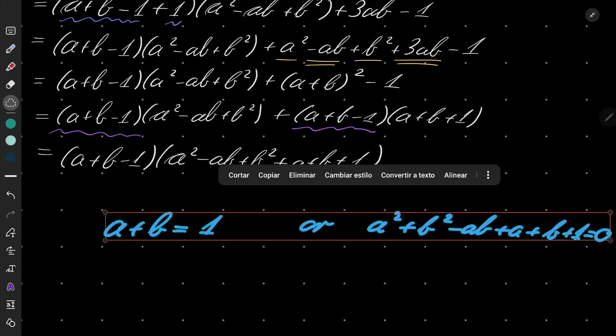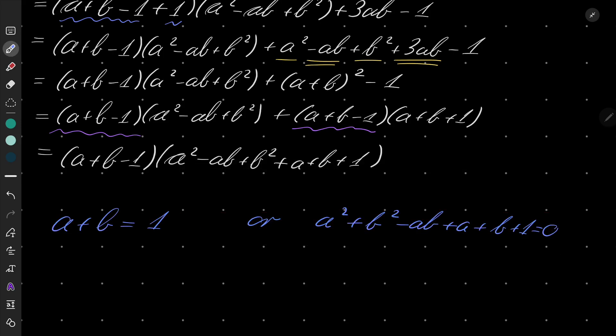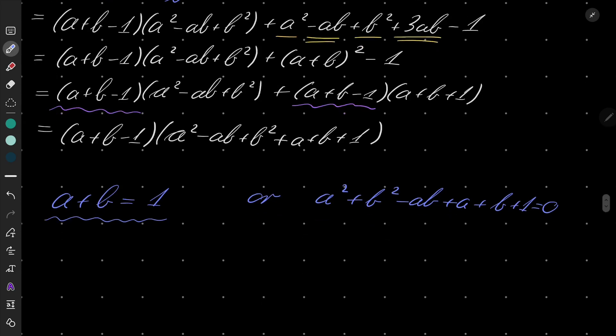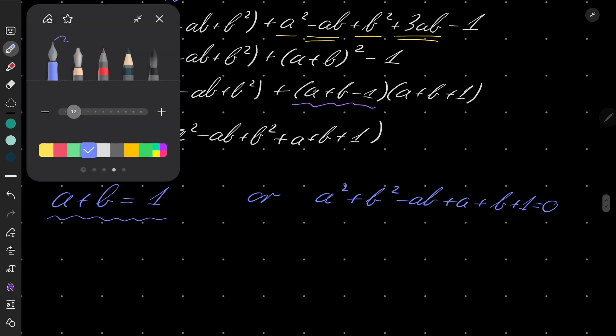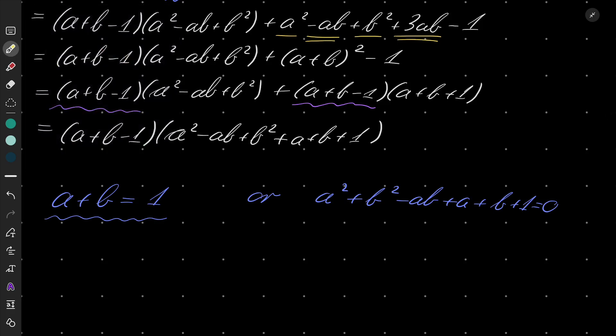The first option is already solved — there is nothing more to be done. It cannot be simplified any further. This is satisfied by all integers such that a plus b equals 1. But the second equation can be simplified, and now I will make use of the identity which I hinted at. Because here I have a squared, here I have b squared, and here I have 1 squared.